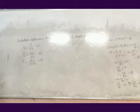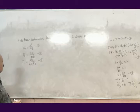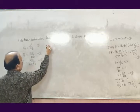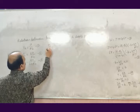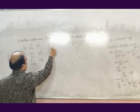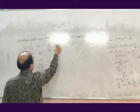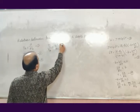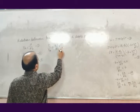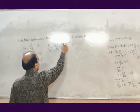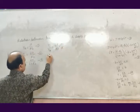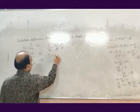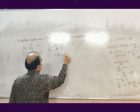Let us first find the relation between boil temperature and temperature of inversion. Divide equation 1 by equation 2. Ti divided by Tb is equal to (2A / Rb) multiplied by (Rb / A). R, B, and A all cancel out, and we have Ti = 2 times Tb, equation number 4.